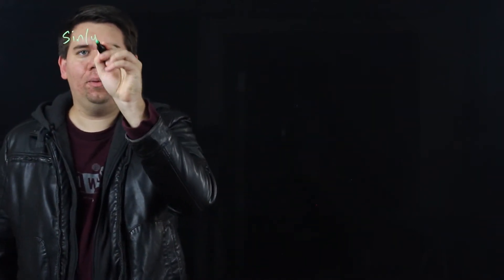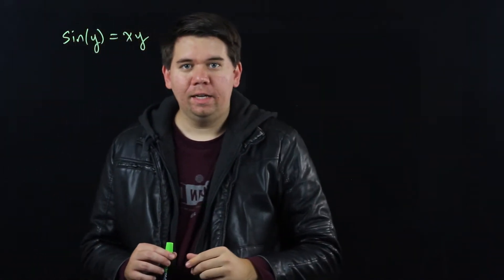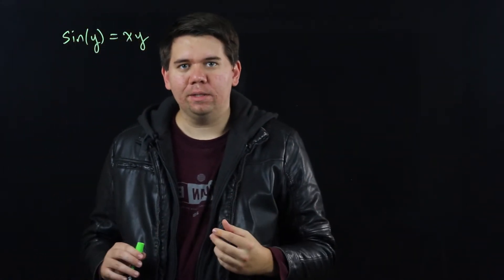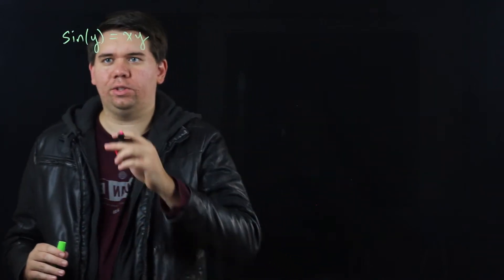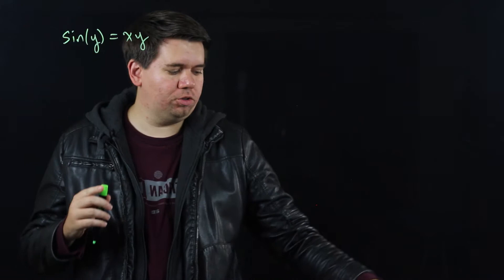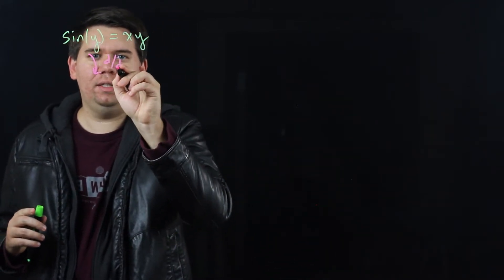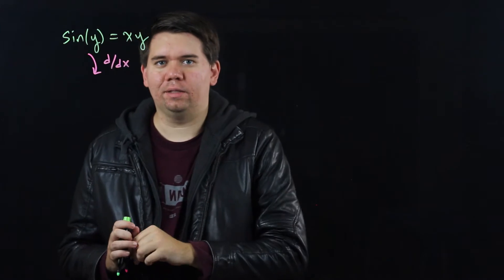Consider the function sine of y is equal to xy. If we want to find what y prime is, we can use implicit differentiation. We're just going to look at this equation and calculate the derivative of both sides with respect to x. So we'll just do d/dx to both sides.